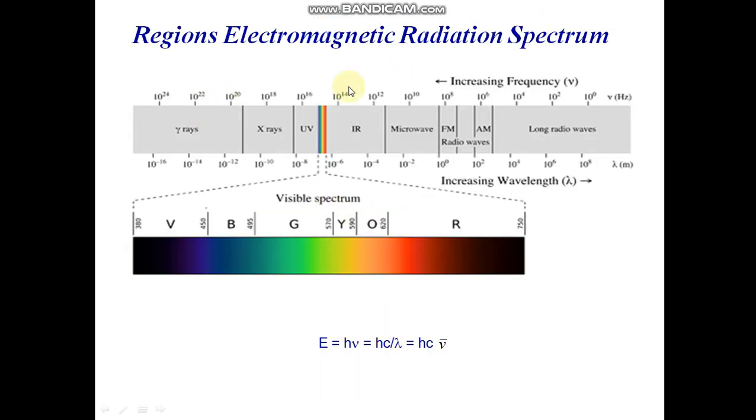Region of Electromagnetic Radiation Spectrum. This is the gamma ray, x-ray, UV, IR, microwave, radio wave.